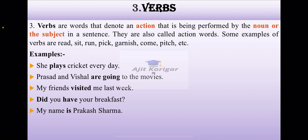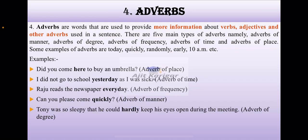The next part of speech is adverbs. Adverbs are words that are used to provide more information about verbs, adjectives, and other adverbs used in a sentence. There are five main types of adverbs, namely adverbs of manner, adverbs of degree, adverbs of frequency, adverbs of time, and adverbs of place. Some examples of adverbs are today, quickly, randomly, early, 10 a.m., etc.